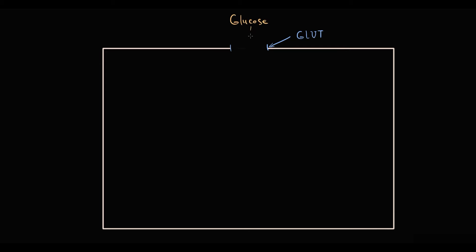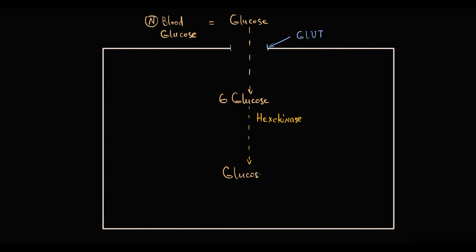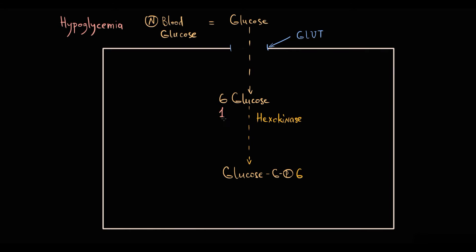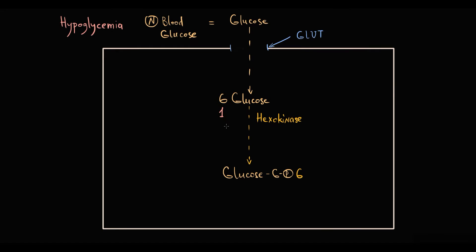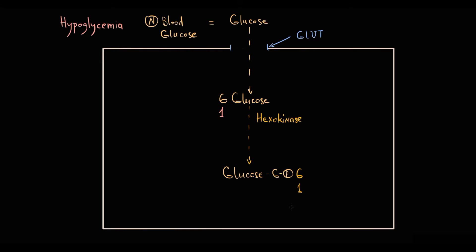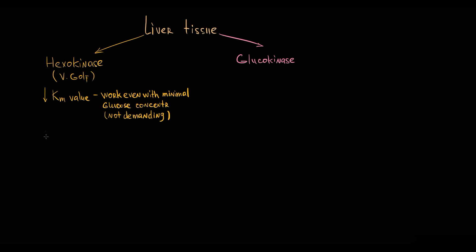For example, suppose that at normal blood glucose level, 6 glucose molecules per minute enter the cell through a GLUT transporter, and hexokinase phosphorylates all 6 to glucose 6-phosphate. And even if hypoglycemia occurs, and instead of 6, only one glucose molecule enters the cell per minute — so the overall glucose concentration inside the cell is low — this enzyme will still pick up glucose molecules and convert them into glucose 6-phosphate. It is a very humble enzyme that does not demand high amounts of glucose.